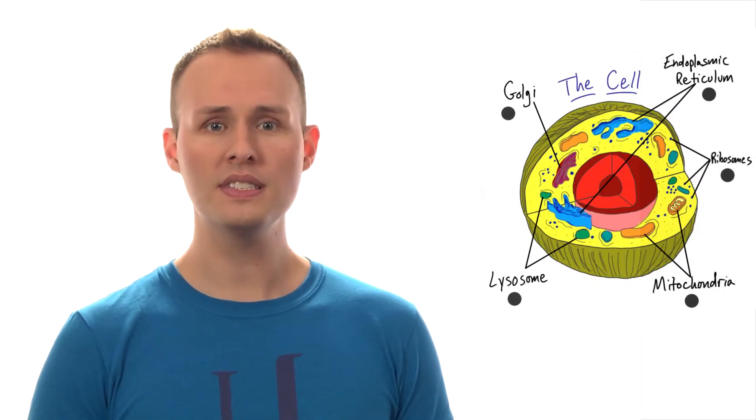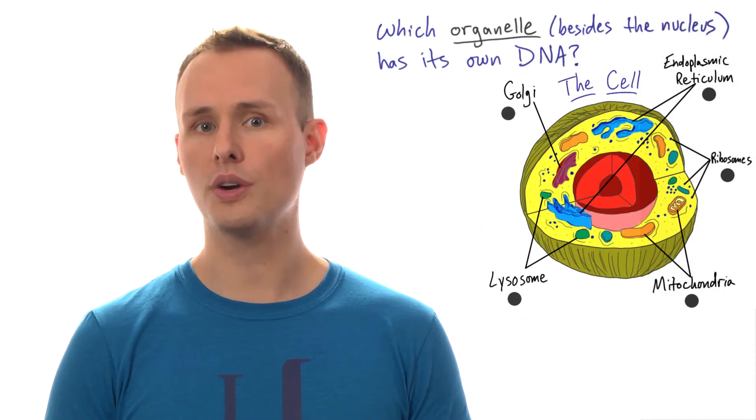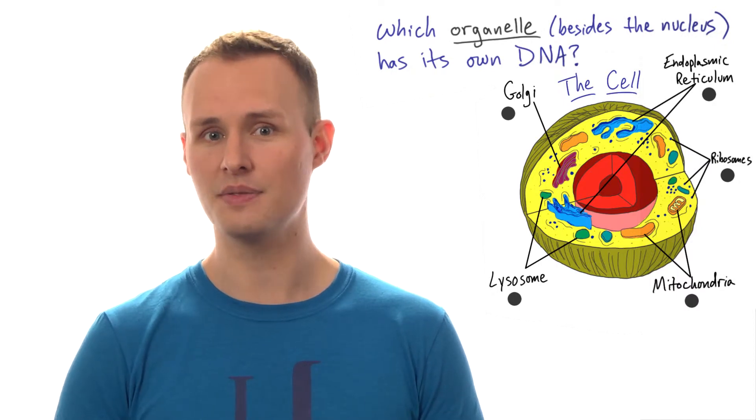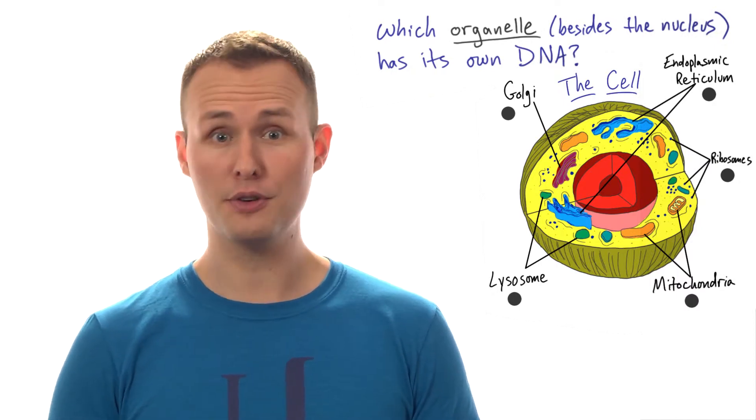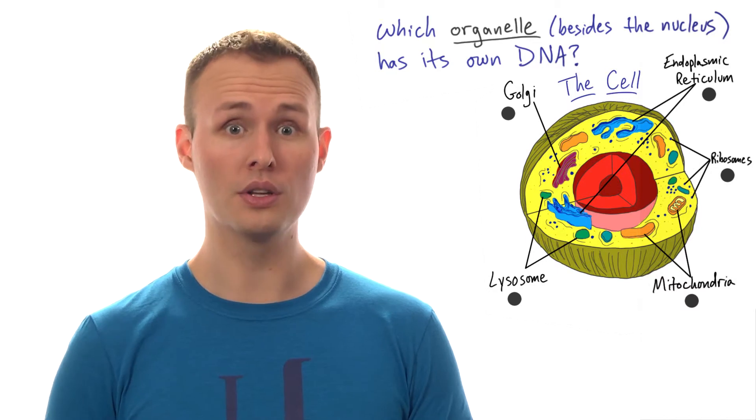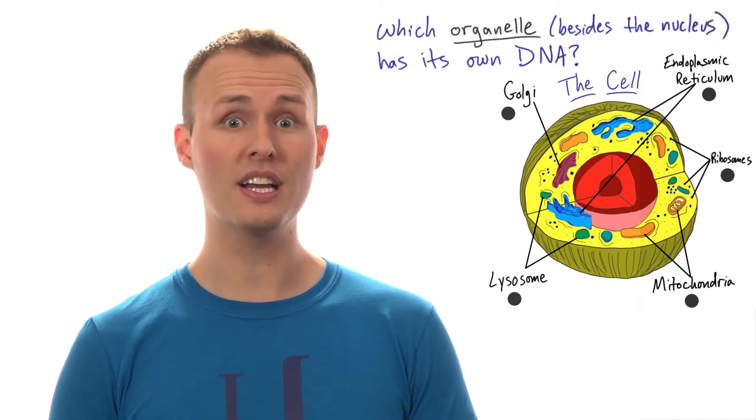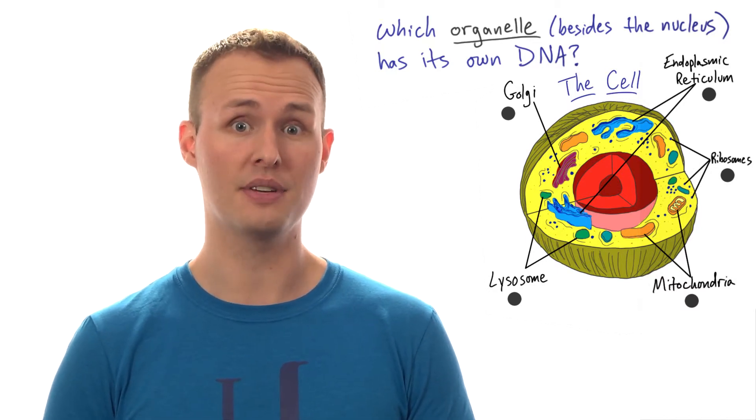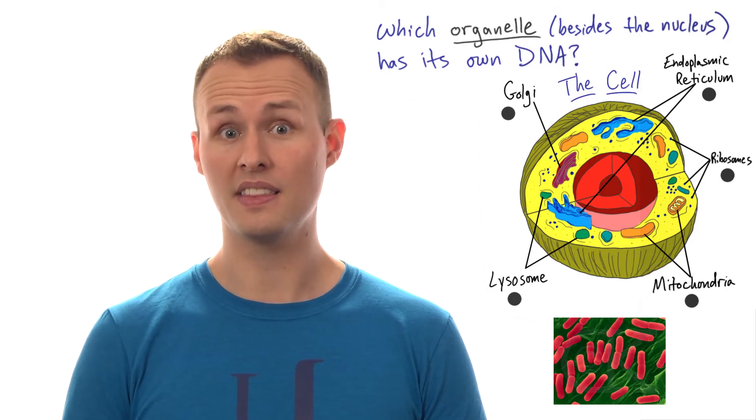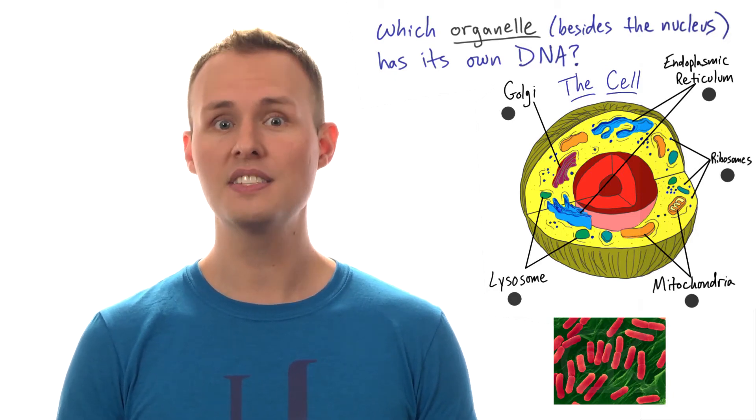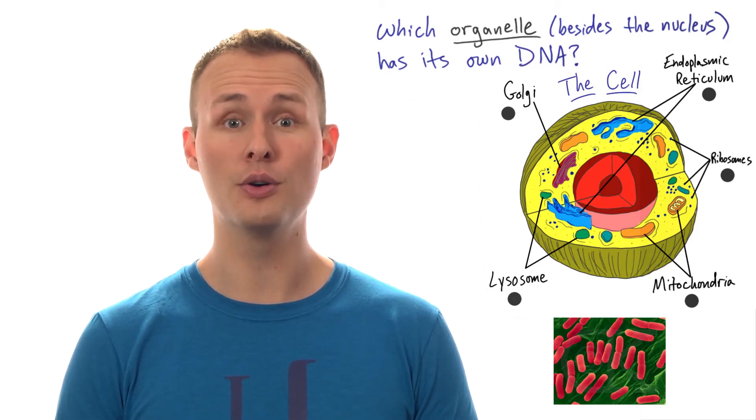So take a look at this picture of a cell here. What I want to see if you can do is look at this picture and pick out which organelle you think has its own set of DNA. Now this can be a little difficult if you don't have a background or know where to look. But remember that this organelle used to be its own free living bacteria. And bacteria look like this. So do your best and see if you can figure out which organelle has its own DNA.